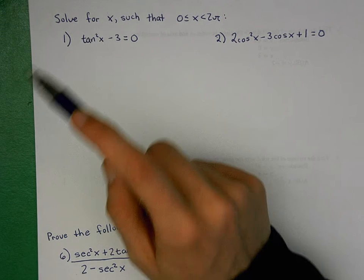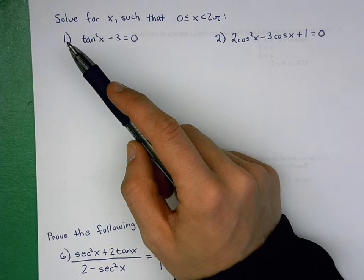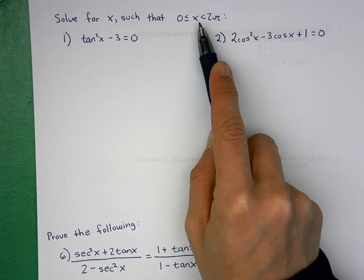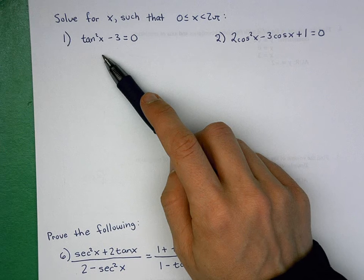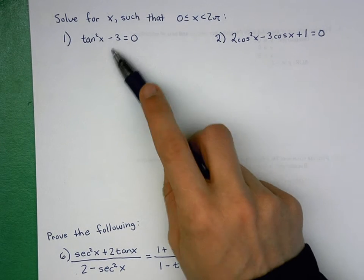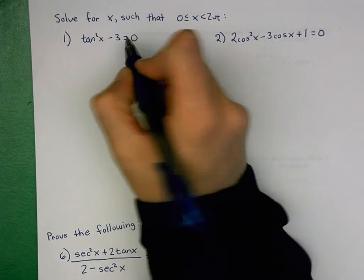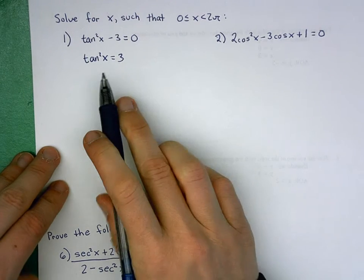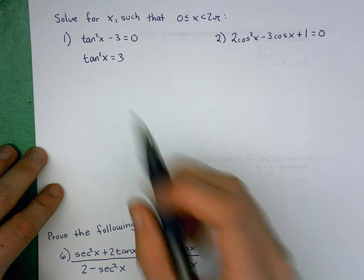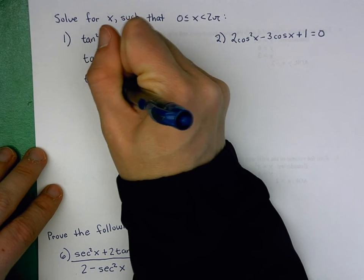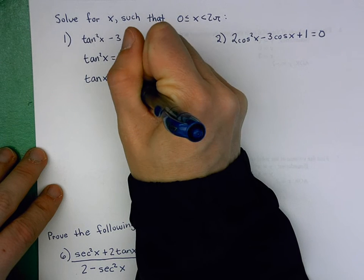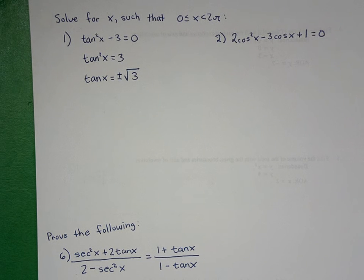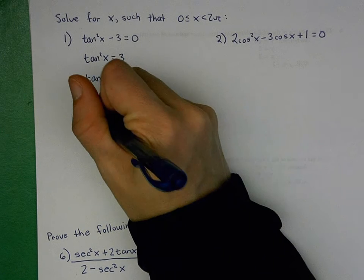First up, numbers 1 and 2 share the same instruction: solve for x such that x is between 0 and 2π, including 0 but not 2π. For number 1, we're given tan²x - 3 = 0. Starting by isolating the trig, we add 3 to both sides. Then to remove the square, we square root both sides — and remember, that gives us plus and minus √3, not just √3.